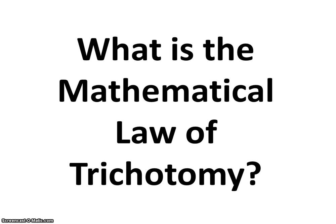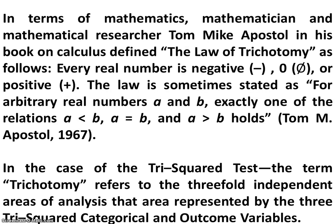What is the mathematical law of trichotomy? Mathematician Tom Michael Postle, in his 1967 book on calculus, defined the law of trichotomy as follows: every real number is negative, an empty set, or positive. The law is sometimes stated as: for arbitrary real numbers A and B, exactly one of the relations holds true — A is less than B, A is equal to B, or A is greater than B. In the case of the Tri-Squared Test, trichotomy refers to the three-fold independent areas of analysis represented by the three Tri-Squared categorical and outcome variables.